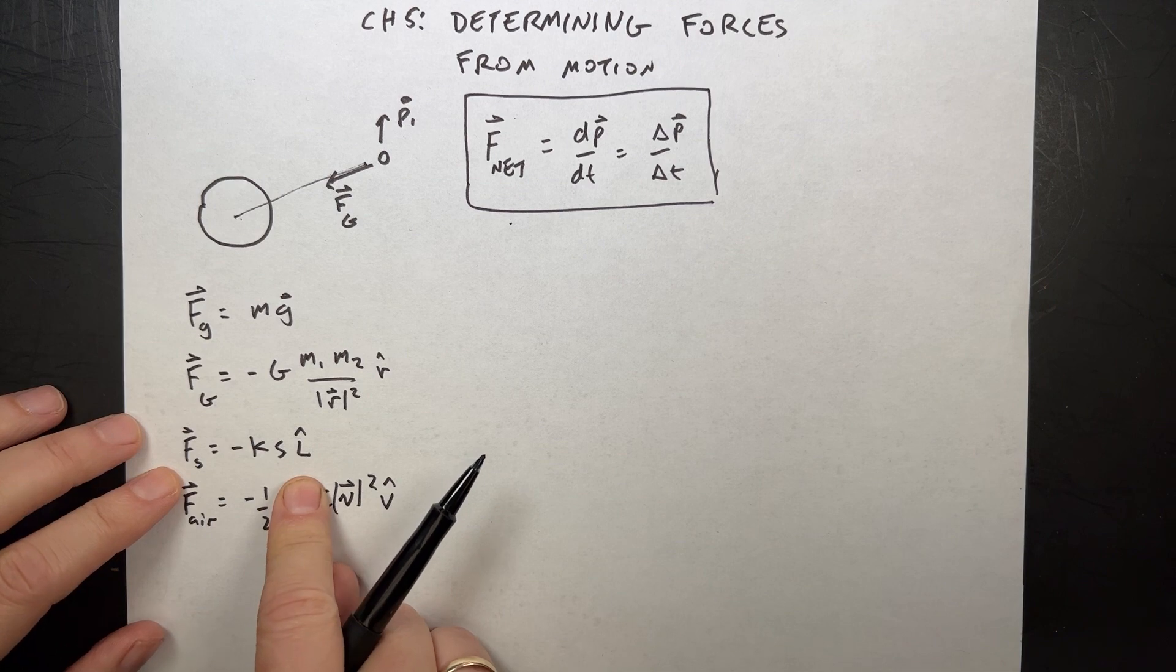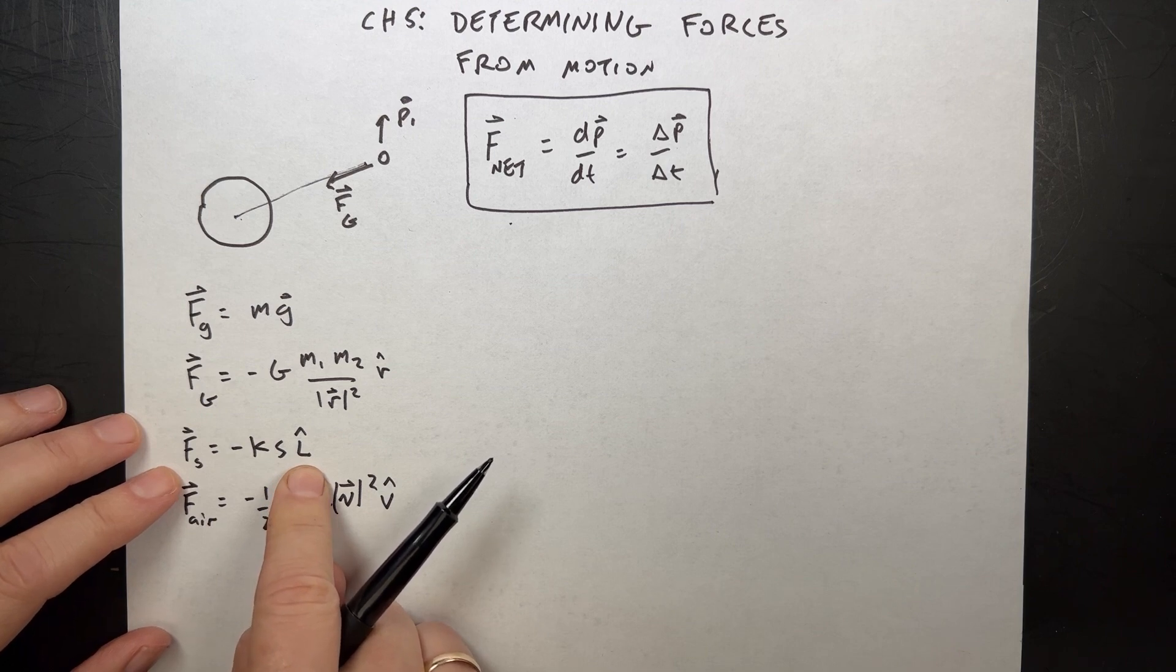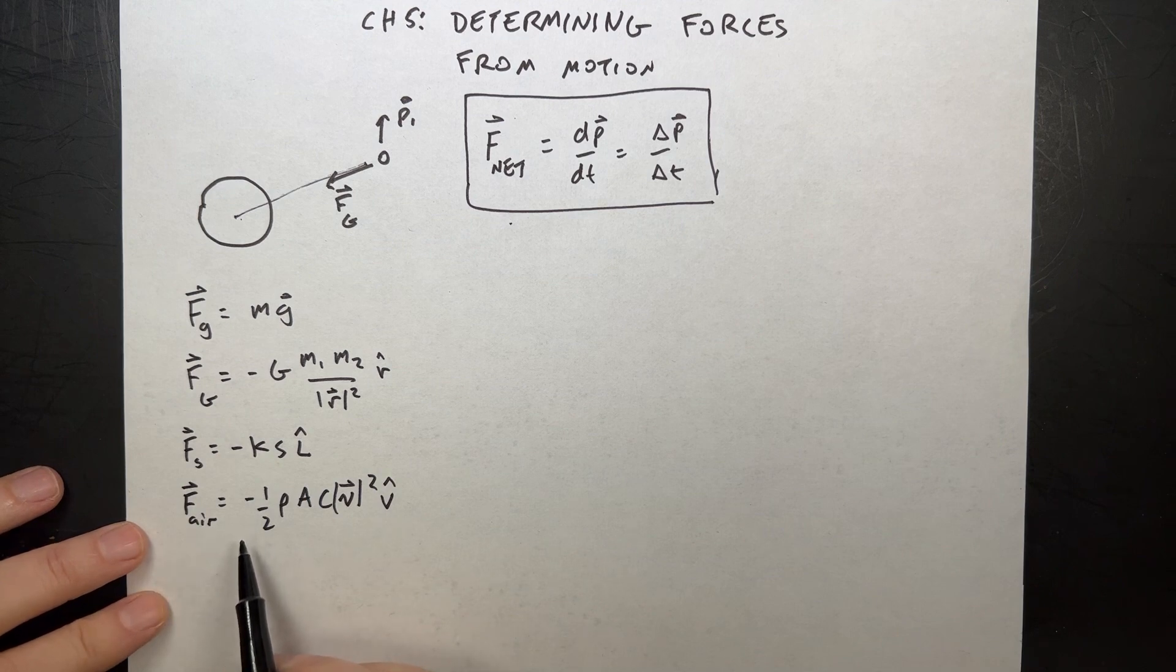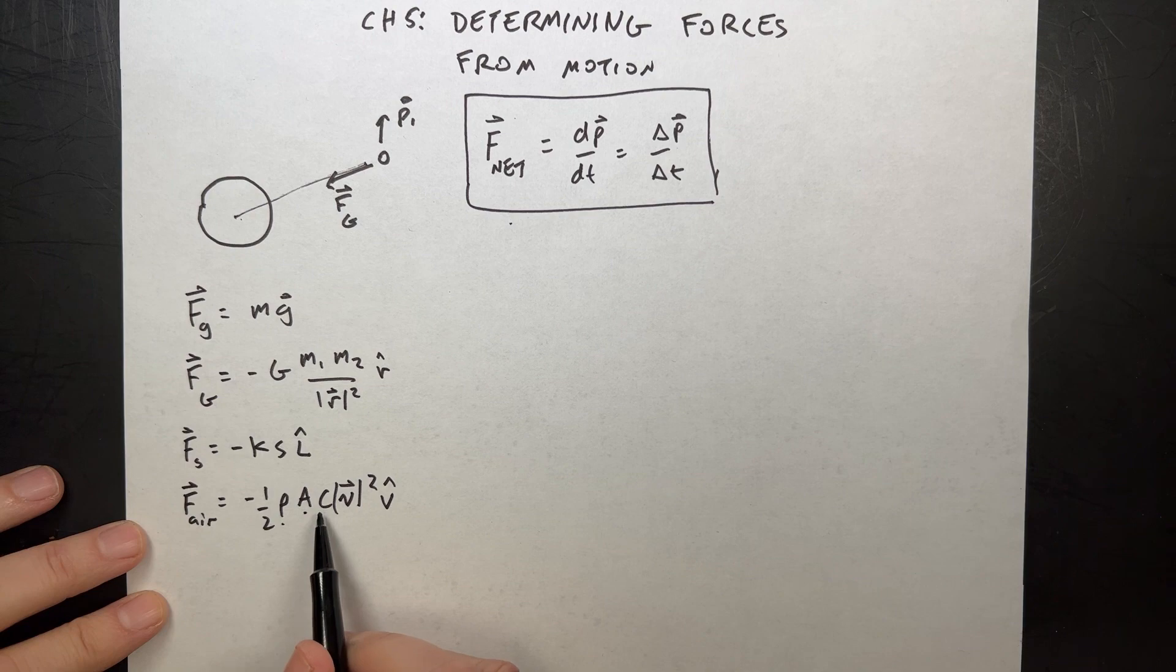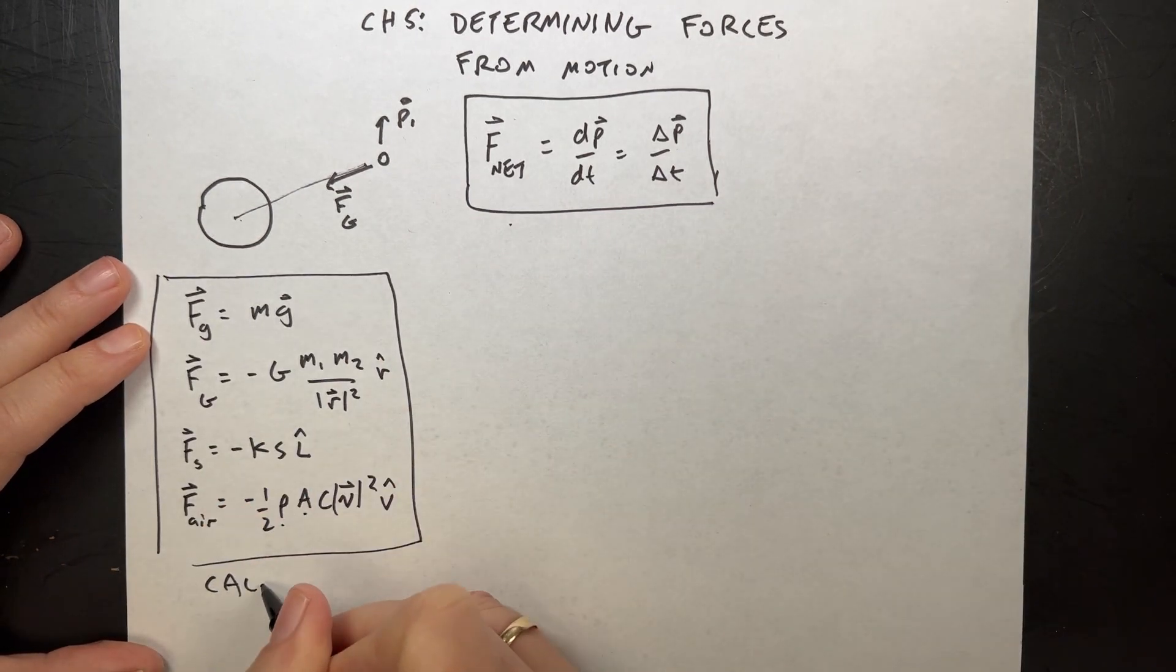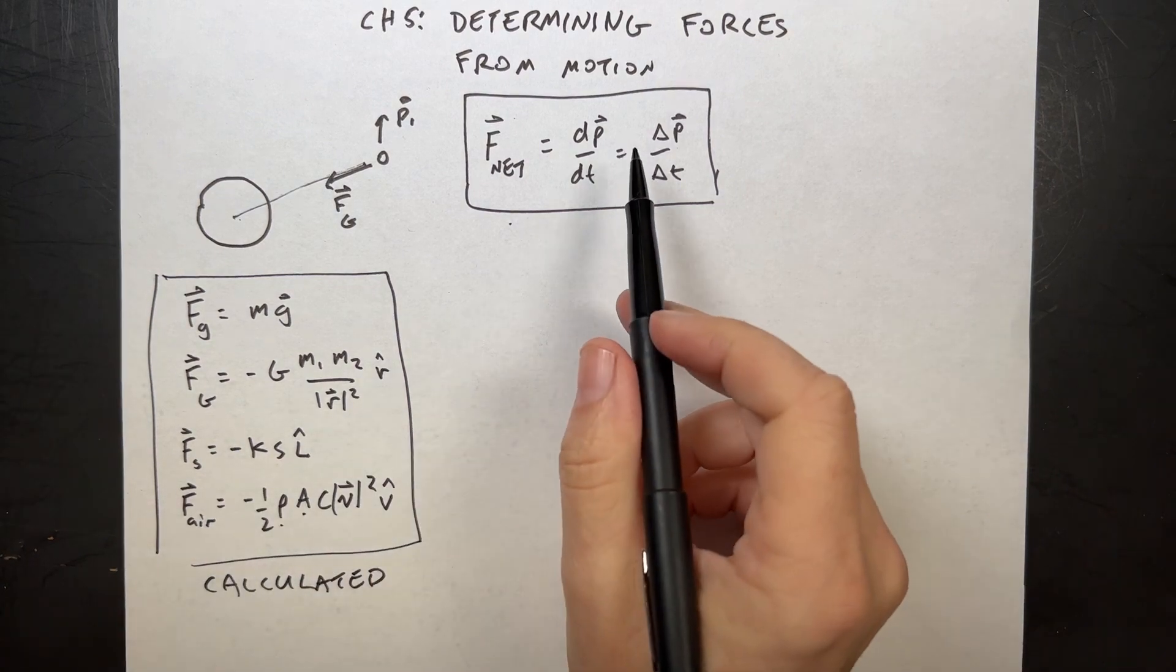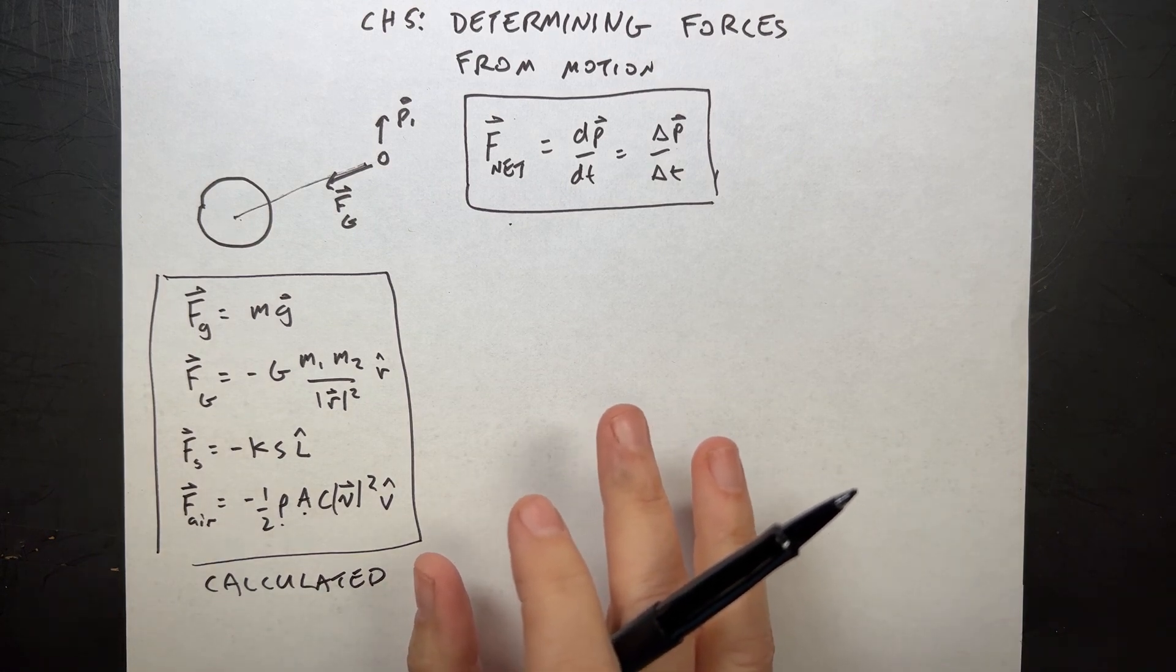This is the force due to a spring. If I know the amount the spring is stretched, s, and the spring constant, and then the direction of the spring, l hat, I can get a vector force. And finally, what if there's an object moving through the air? There could be an air resistance force, where that's the density of the air, the size, the cross-sectional area, drag coefficient, velocity, v hat. I can calculate this. These are all calculated forces.